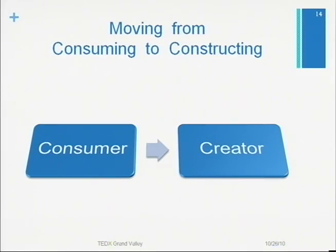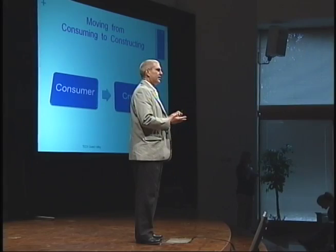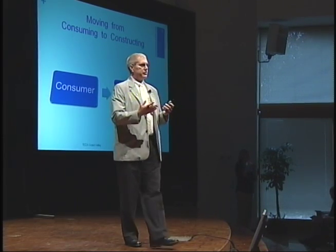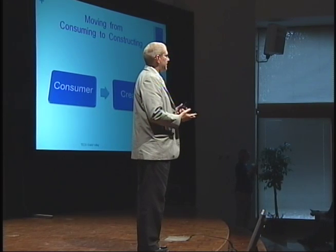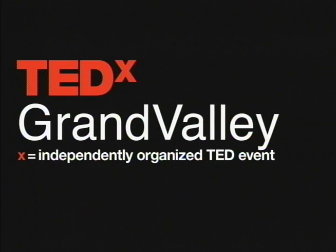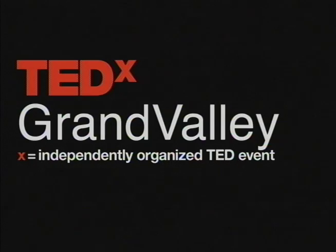I don't want you to leave here thinking that you're either a learner or a student, or that the people in your classrooms are fixed as one or the other. These are created. We need to support students to become learners, and I think the ideas of using structure, choice, and an apprenticeship model are ways we can do that — so that we can have sustainable learners into the 21st century. Thank you very much.